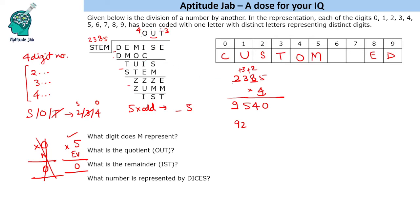We are left with two digits. Multiplying STEM (2385) by T (3): 5×3=15, carry 1; 8×3=24+1=25, carry 2; 3×3=9+2=11... working through: 2385×3 = 7155, so Z=7. The one remaining digit is I, so I=6.